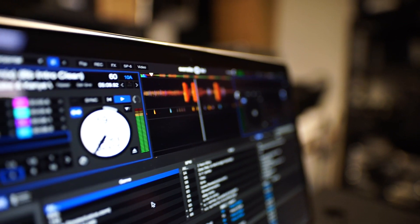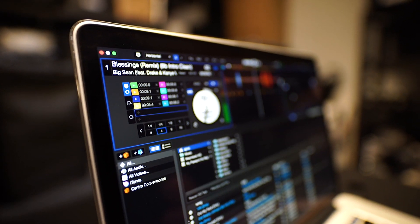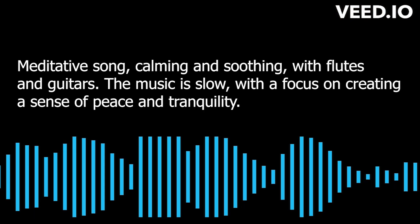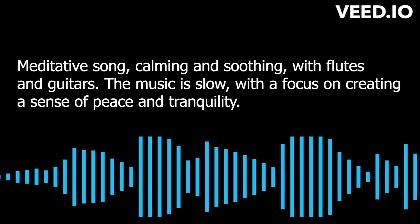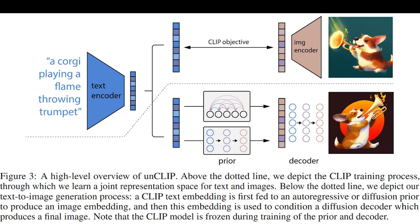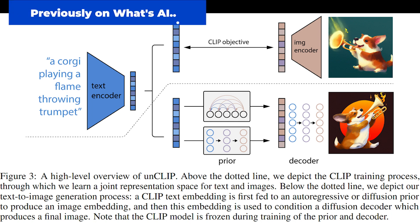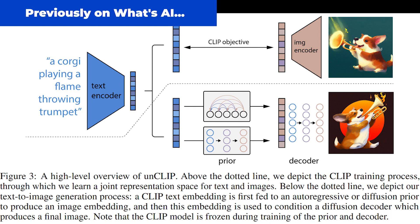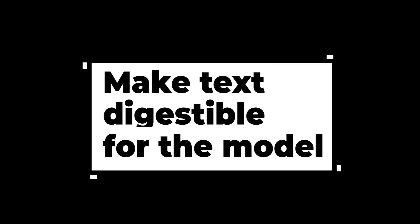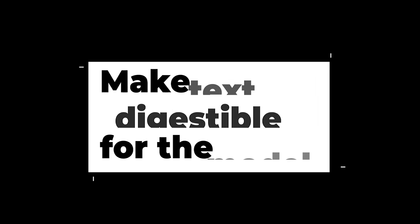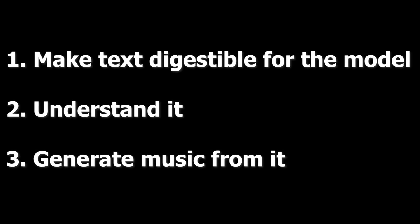How can it generate actual instruments and voice from general text descriptions like a meditative song, calming and soothing, with flutes and guitars? As with most recent models, it was by taking the best of multiple approaches. More specifically, their approach is very similar to DALL-E 2, which I already covered on the channel, but with the difference that it generates music rather than images and uses transformer-based models instead of diffusion-based ones. These are basically the same steps as with DALL-E and other image generation models: we take some text, understand it, and then generate content that represents this text in another modality humans understand.